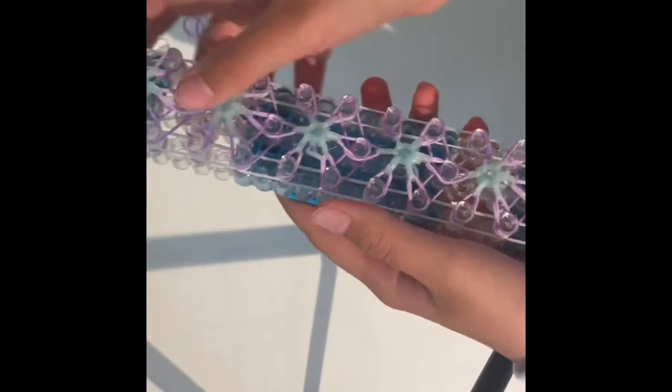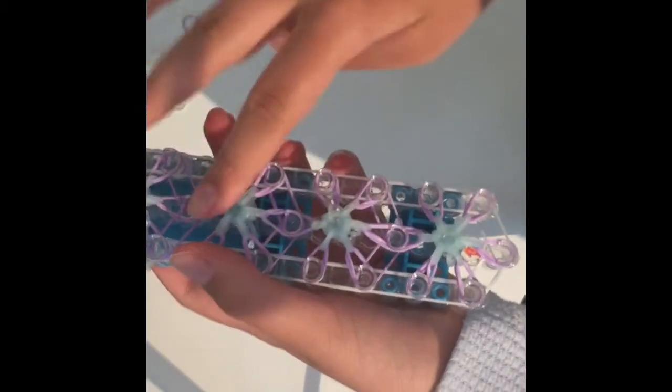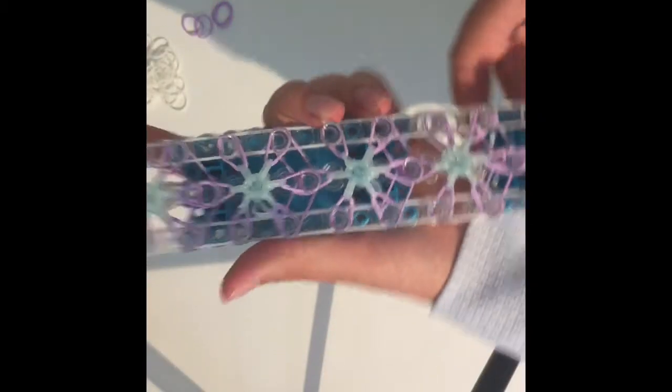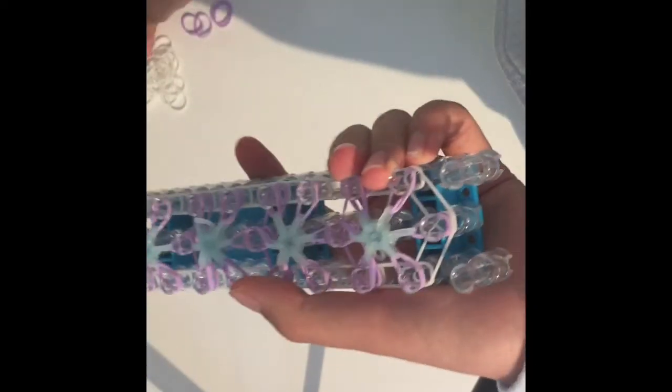Pause the video and make your flowers. Once you have finished placing all of your bands, it should look somehow like this. So after that, you're going to flip your loom and begin your looping process.